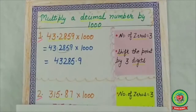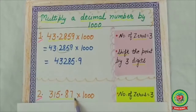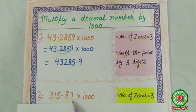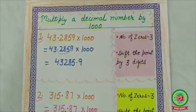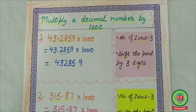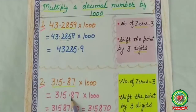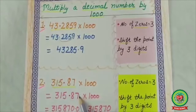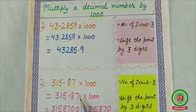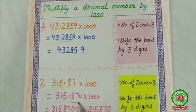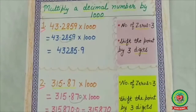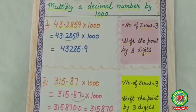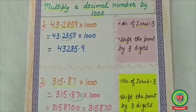Next example: 315.87 multiplied by 1000. Number of zeros is 3, so shift the point by 3 digits. After the point there are only 2 digits, which is less than the number of zeros, so we insert a 0 to make it 315.870. Now shifting the point 3 digits to the right, the answer is 315870.0, which equals 315870.